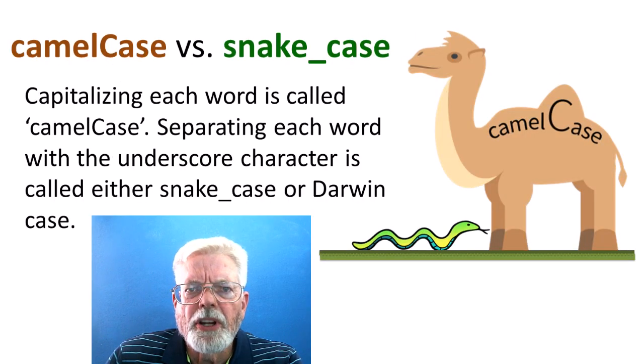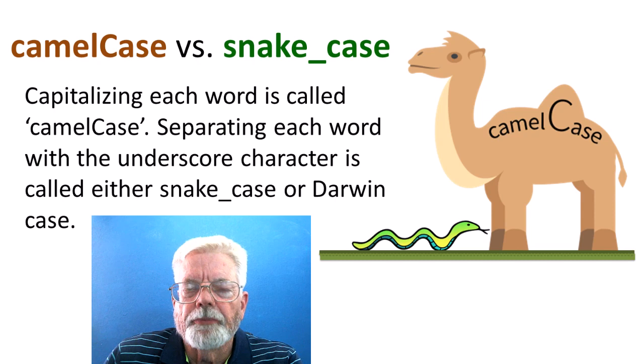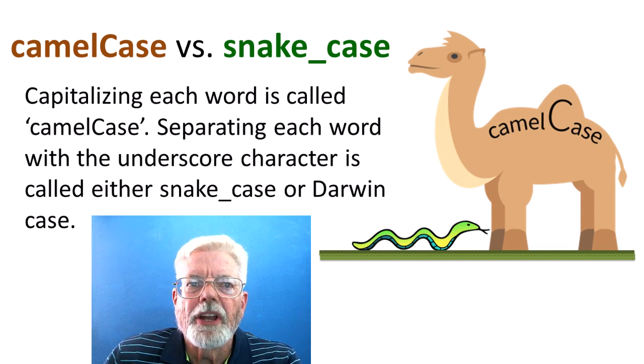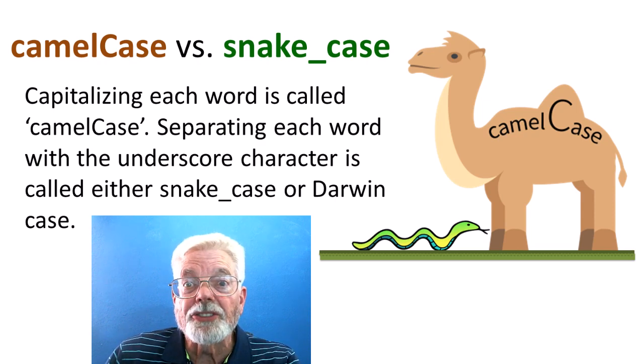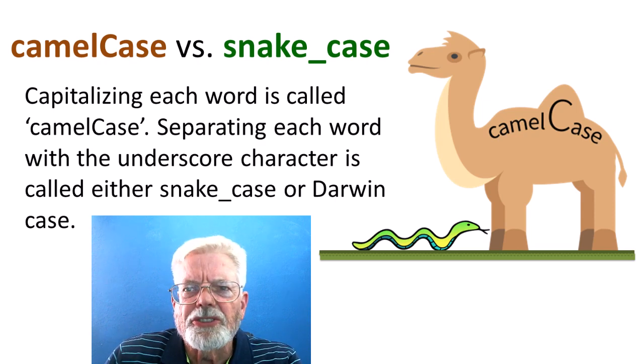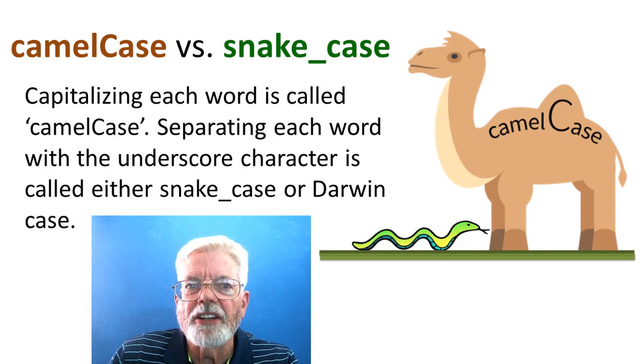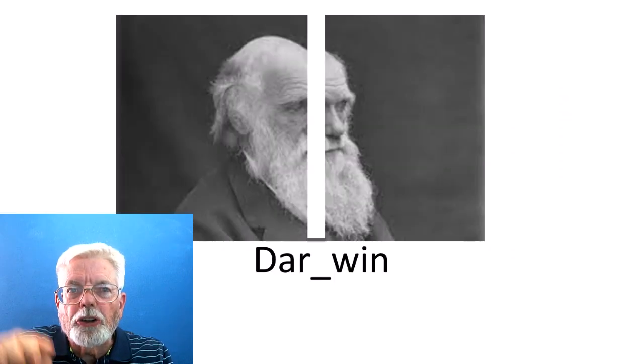Capitalizing each word is called Camel Case. Separating each word with the underscore character is called either Snake Case or Darwin Case. Camel Case makes sense to me. I kind of guess how Snake Case got its name. But Darwin?